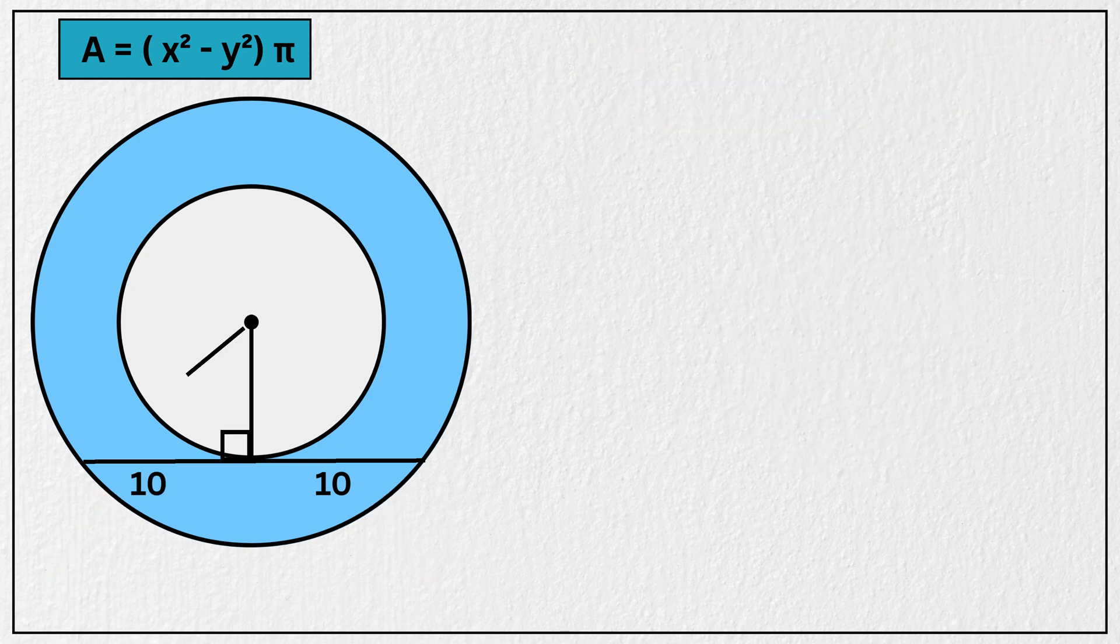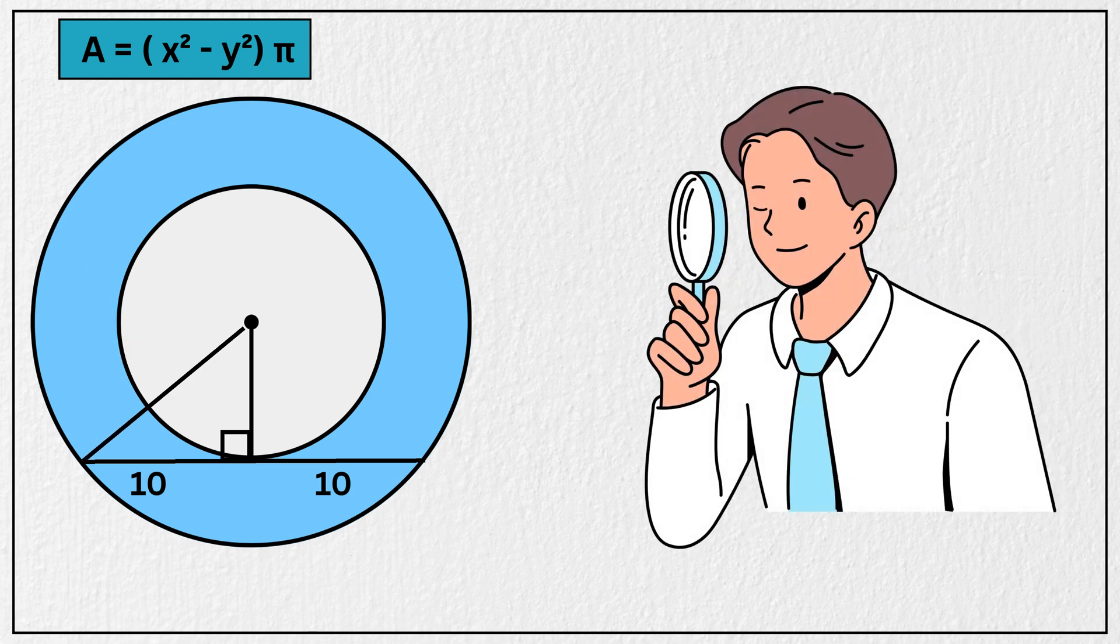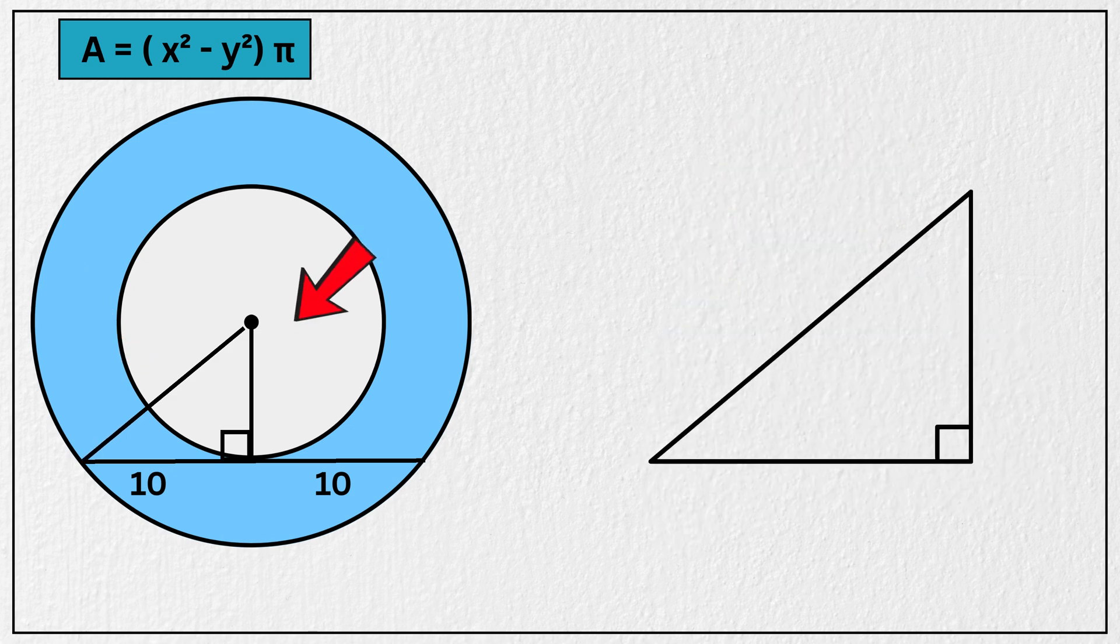Now let's draw a line from the center to one endpoint of the chord, just like this. Did you notice something? This is right angle triangle with hypotenuse as x. One leg is y, and other leg is 10 units.